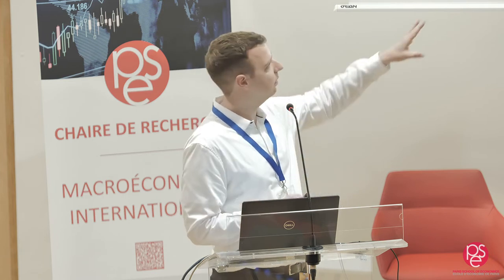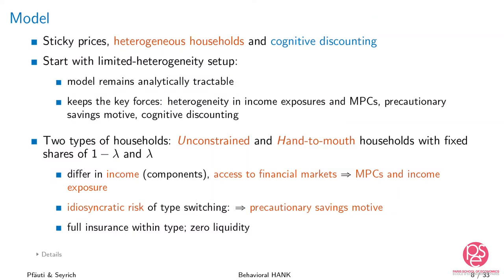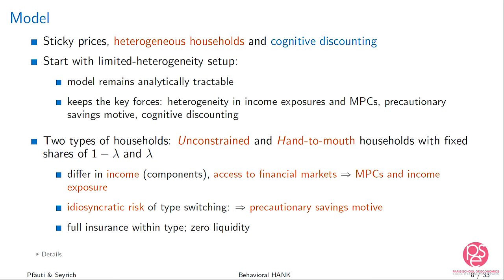Each individual household faces an idiosyncratic risk of switching type from one period to the next: an unconstrained household can become hand-to-mouth with probability one minus s. This gives a precautionary savings motive, very similar to a standard Aiyagari model. For tractability, we assume full insurance within type, and we focus on the zero-liquidity equilibrium. These assumptions will be relaxed later on.